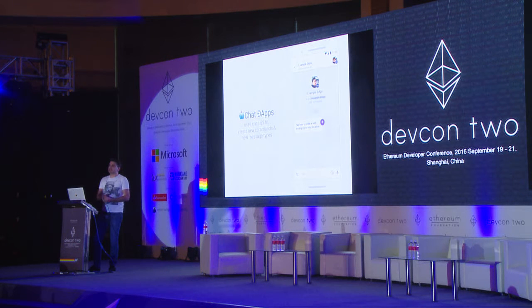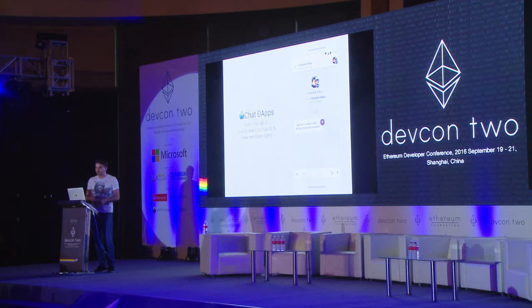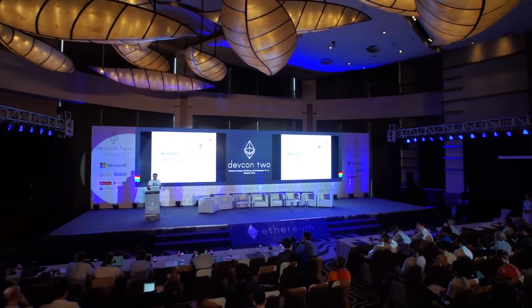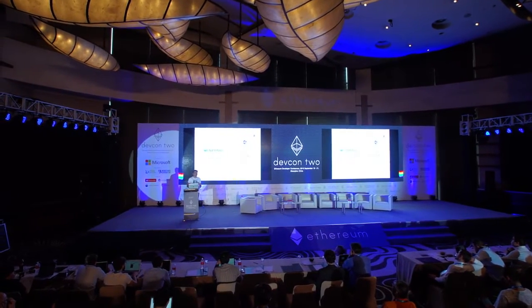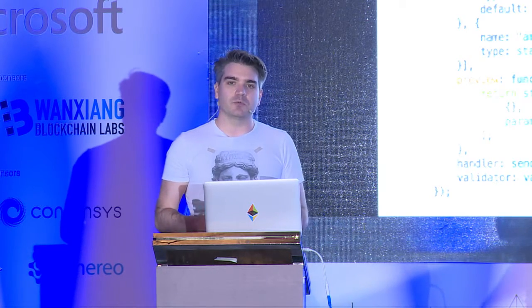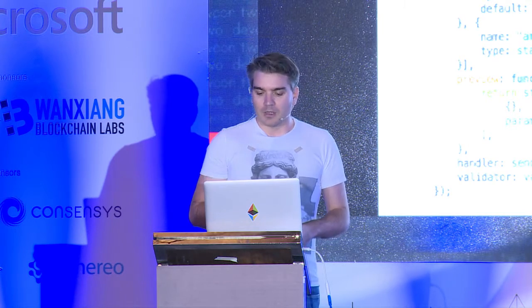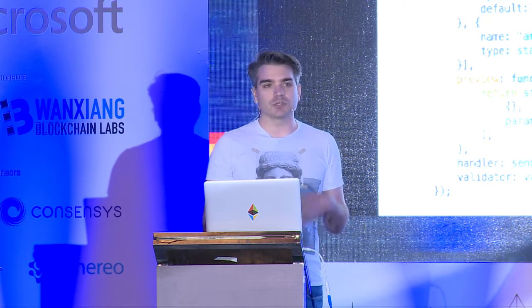Chat dApps integrate with Status more closely using a chat API. They can create new commands and new message types. Here we have an example dApp, and they've sent us a request message, just like Console did. In the bottom left, next to the text input, there is a command list icon with a little blue dot on it, indicating there is a pending request somewhere within the chat history. You can either start typing directly with an exclamation mark or tap on the command list icon. Once there, the suggestions area is populated with all commands and requests available within the context — here we have one pending request and two commands.